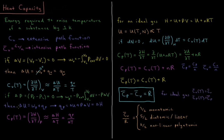The change in internal energy delta U equals the constant pressure work plus the constant pressure heat. So the constant pressure heat equals delta U plus P times delta V, which from previous work on enthalpy is equal to the change in enthalpy.